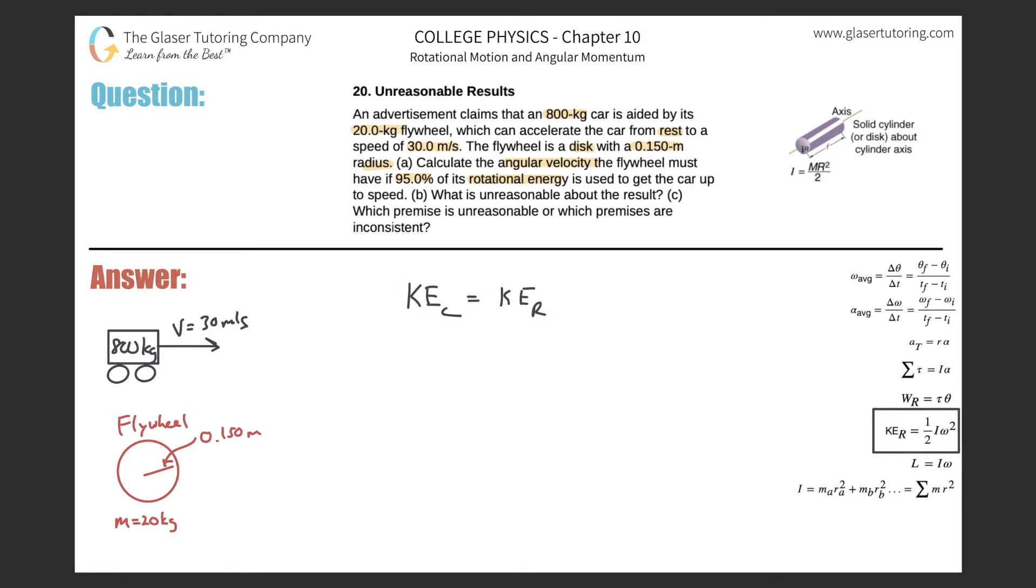This in and of itself is true, however there is another condition. It says calculate the angular velocity the flywheel must have if 95 percent of its rotational energy is used to get the car up to speed. So which side of this equation should be greater than the other? It sounds like whatever rotational energy is being produced, only 95 percent of it will be then used for production of kinetic energy in the car.